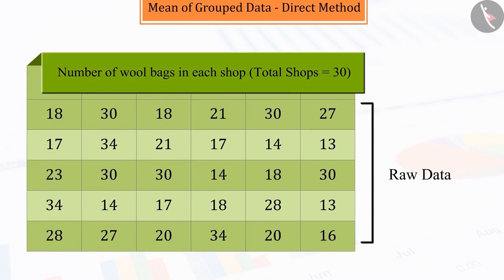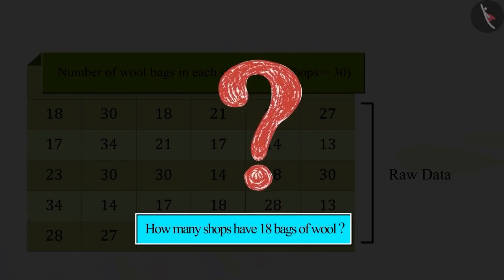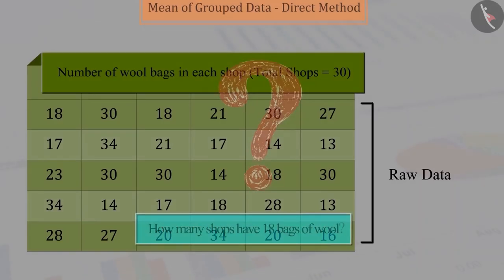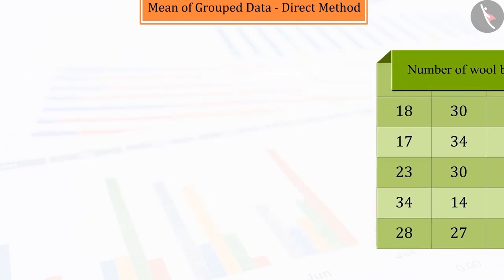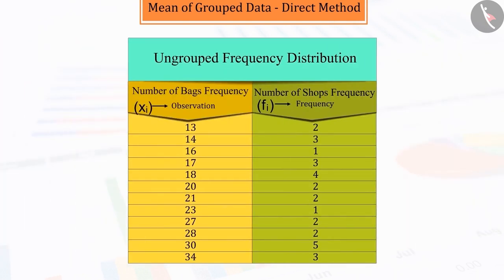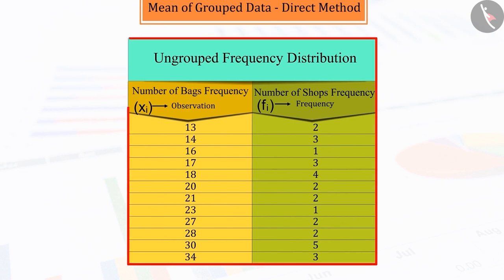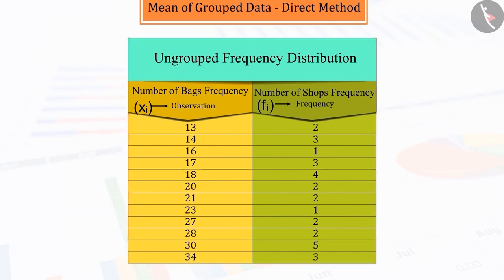With the help of this data, can you tell how many shops have 18 wool bags? Absolutely correct. We have already learned to use the ungrouped frequency distribution tables to solve these types of problems, which is represented by the following table. By looking at the table, we can tell that there are 4 shops that have 18 wool bags each.